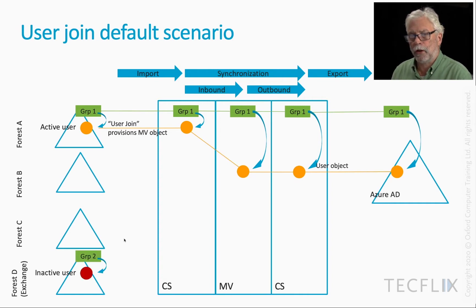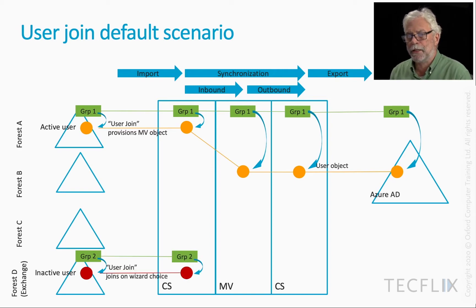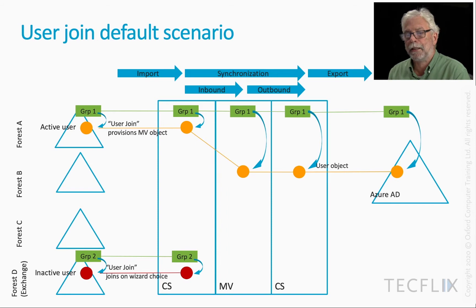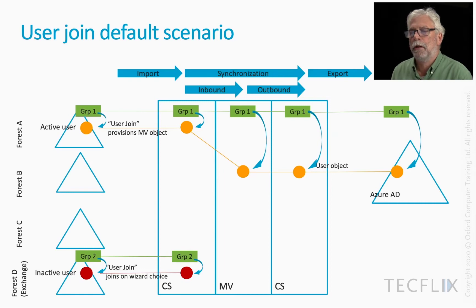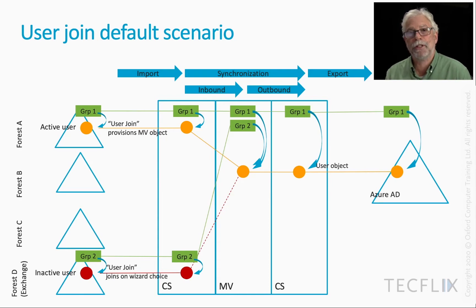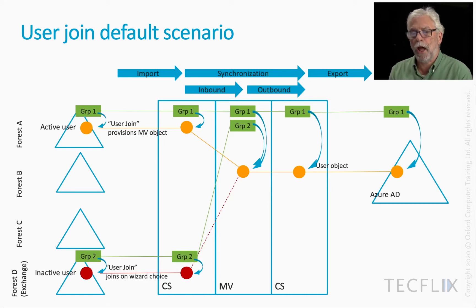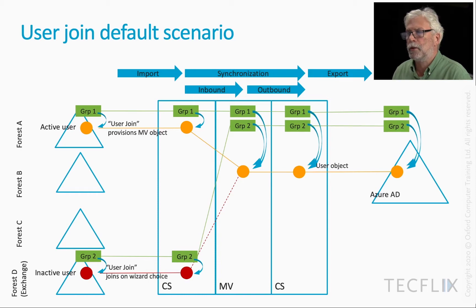In Forest D — I'm going to use Forest B and Forest C later to show you other things — we have an inactive user. That's imported and we have a rule in place that joins based on the wizard choice. It could be the classic account resource scenario using the ObjectSid, or in our case using either the SAM account name or email address, depending on what's going on. Whichever it is, it's able to join up because we've chosen the right option and the attributes are there to do it. We've also brought along another group — group two is pointing to this inactive user, and its membership flows through all the way to Azure AD.